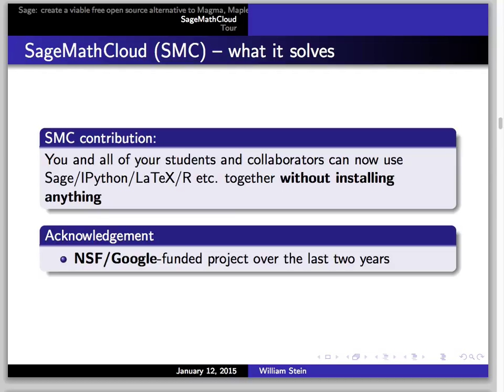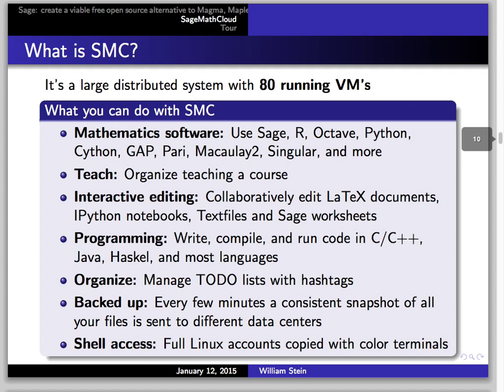SageMath Cloud has a lot of funding from the National Science Foundation and also from Google over the last two years. Physically, there are 80 virtual machines running in various locations: at the University of Washington, at Google in one of their East Coast data centers, and at Google in Europe. Together, this widely distributed collection of programs provides functionality which just looks like a web page, but it's very robust.